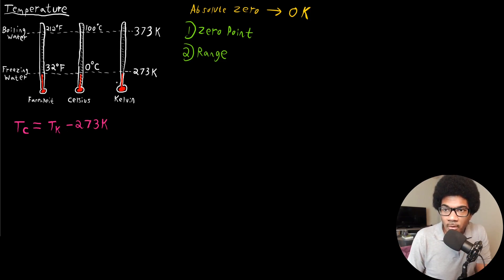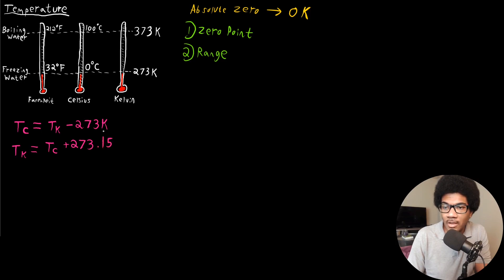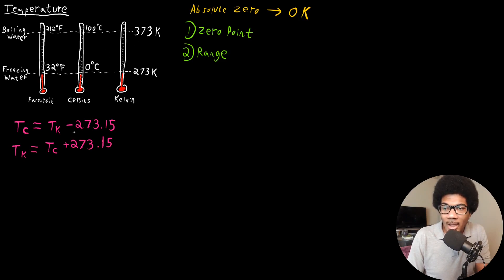To convert from Kelvin to Celsius, all you have to do is subtract 273. So T_C equals T_K minus 273. And if you wanted to convert to Kelvin, you rearrange the equation: T_K equals T_C plus 273. More precisely, we use 273.15. So we just add or subtract 273.15 in order to convert freely between Celsius and Kelvin, since the range is exactly the same — we only need to account for the difference in the zero point.